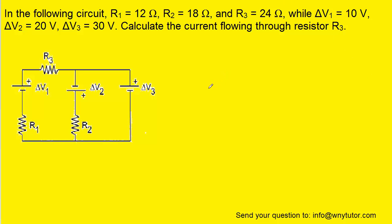Our first step in solving this problem is to draw in the currents that are traveling through each section of the circuit. Each section would include the left section outlined here, the middle section, and the right section. When drawing currents, they typically travel away from the positive terminal of the battery. So we can draw a current exiting the positive terminal and call it I1.